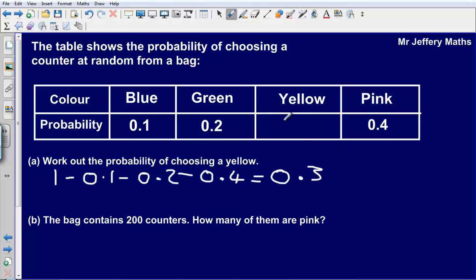So the probability of choosing a yellow would be 0.3. We can then check that 0.4 plus 0.3 is 0.7 plus 0.2 is 0.9 plus 0.1 adds up to 1.